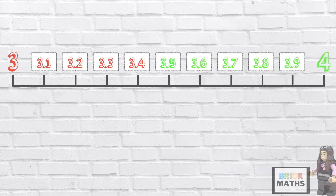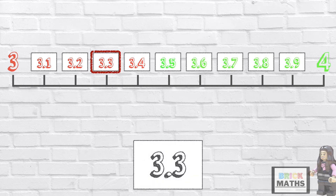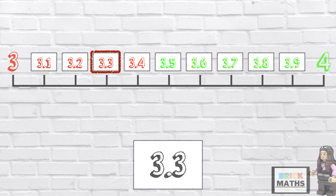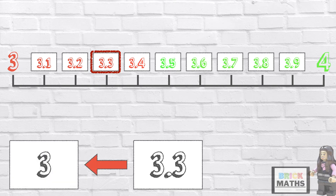Let's have a look at another one. So we've got 3.3. It sits between 3 and 4. Because it ends in 3, we round the decimal number down to the previous whole number, which was 3.